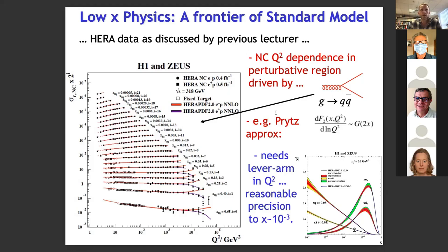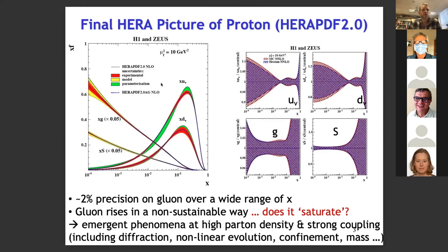Let me go to the parton densities in a bit more detail. So there they are — up and down valence quarks at high x, peaking a little bit below one-third, roughly what you'd expect. And then a sea-quark density and a gluon density which really fly off as x gets small. The typical scale used in HERA presentations is to downscale these by a factor of 20 just to get them on the same picture at a scale of 10 GeV². I'm mainly interested in this gluon density, which is one of the main targets for EIC.